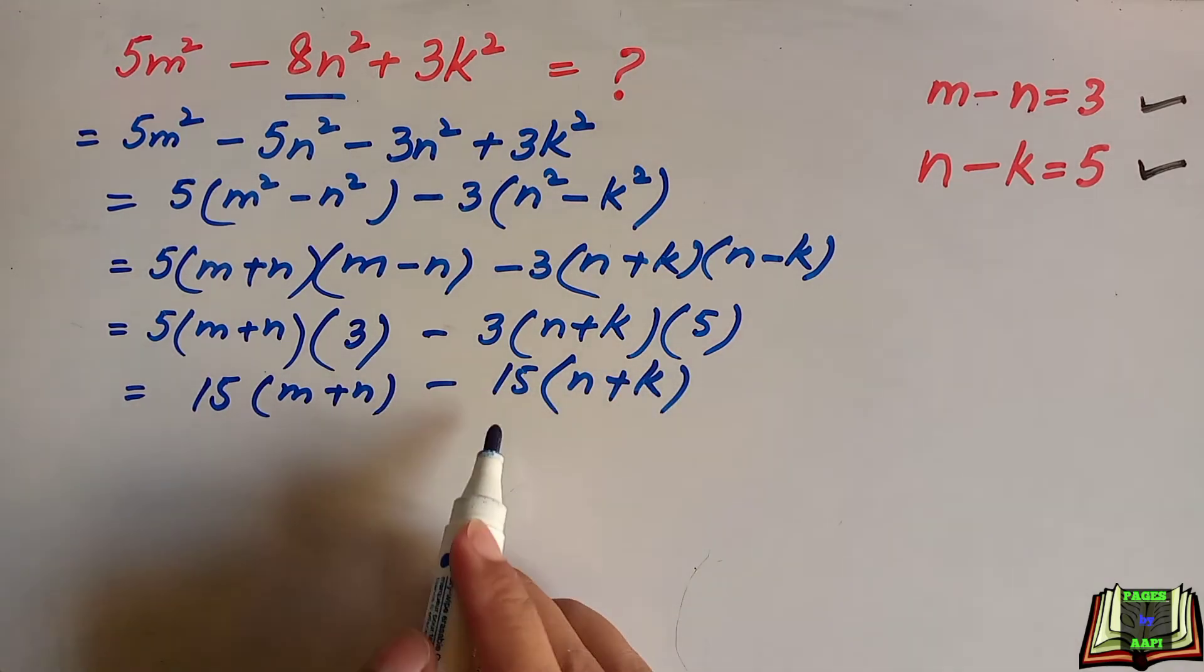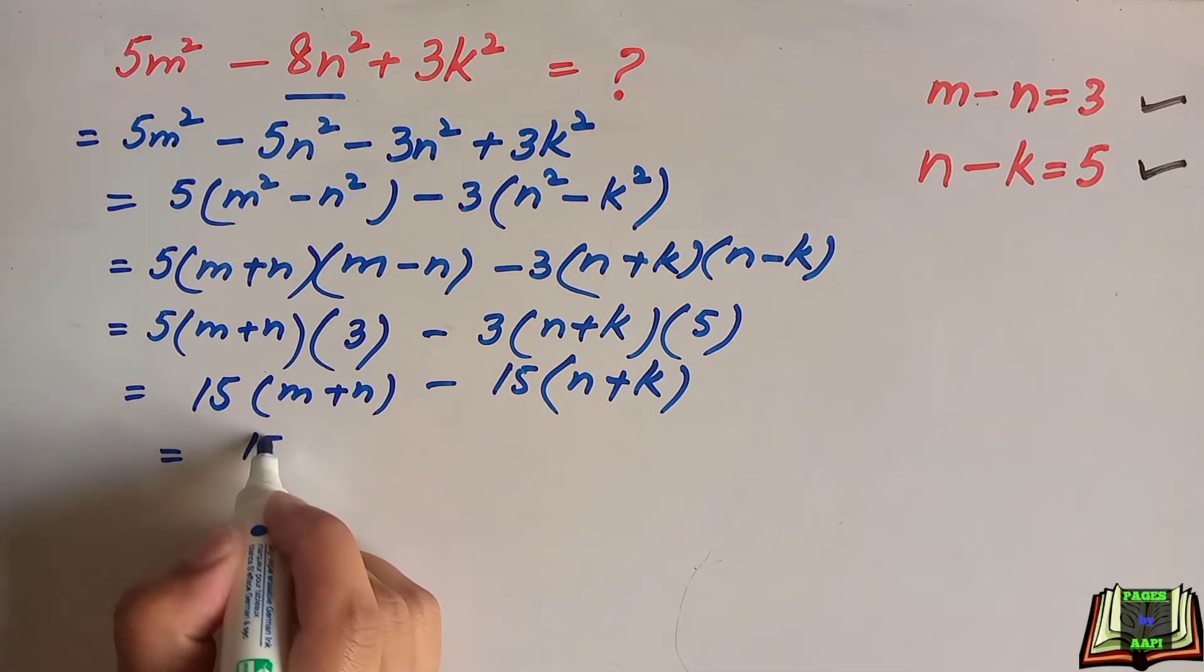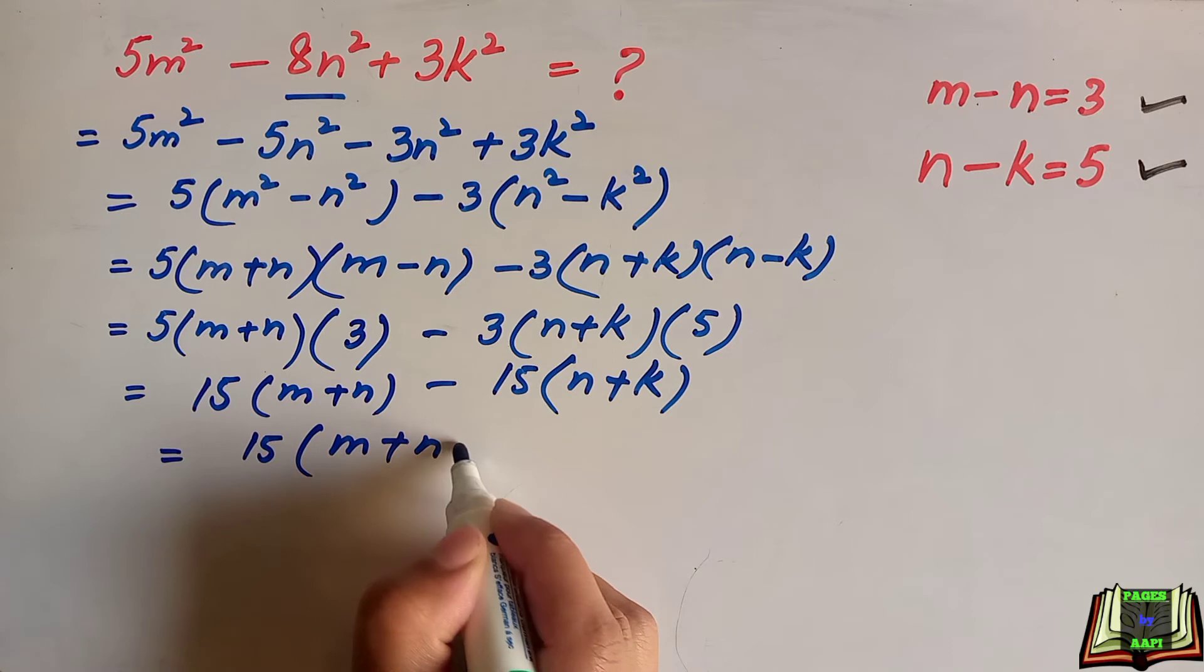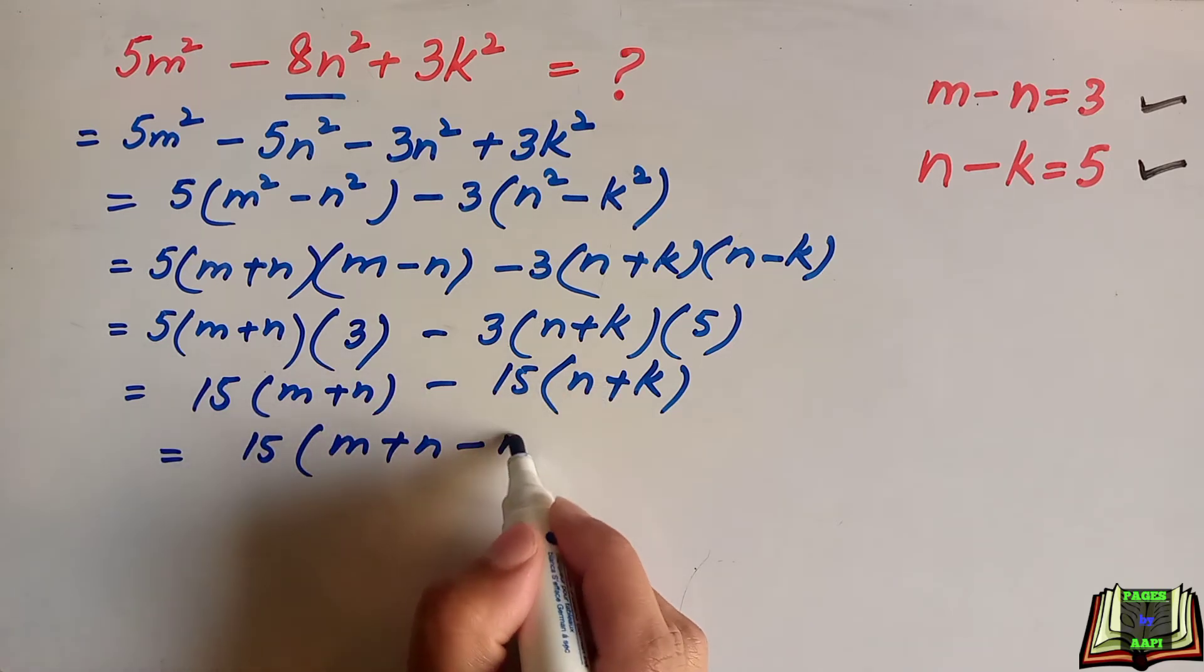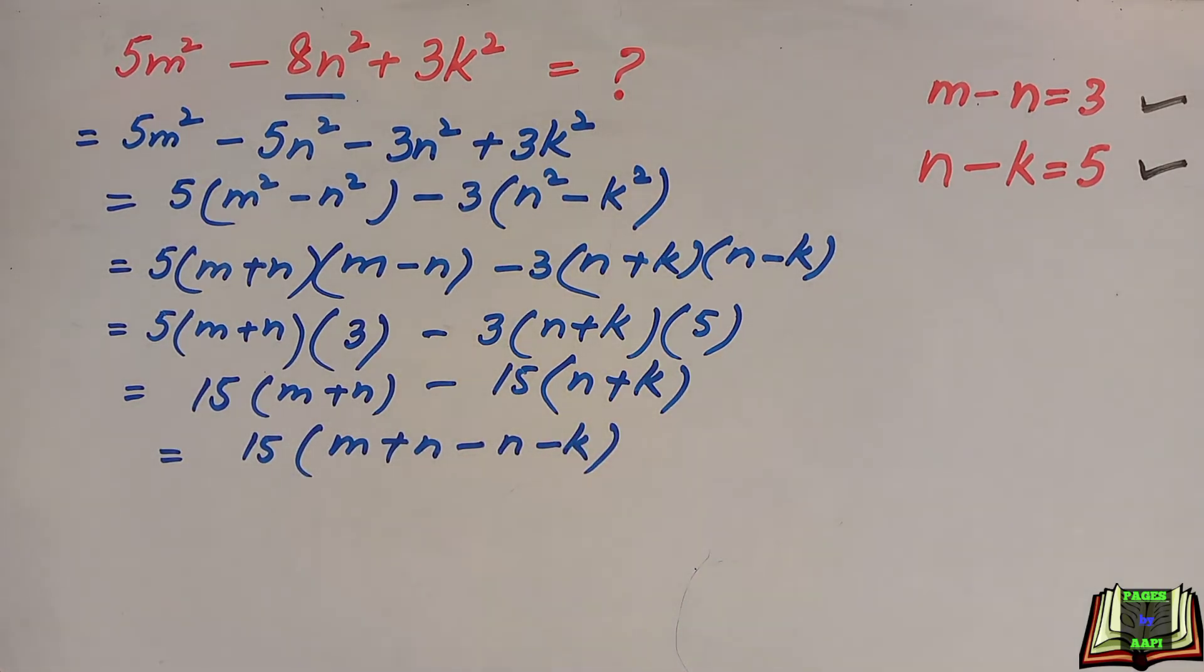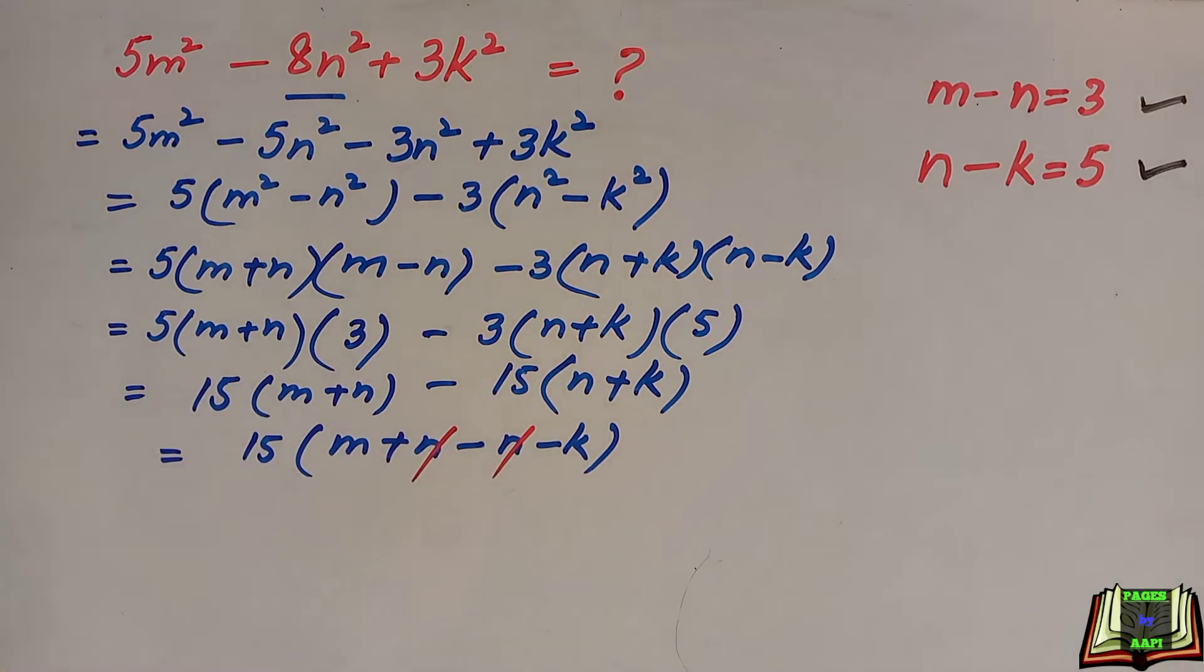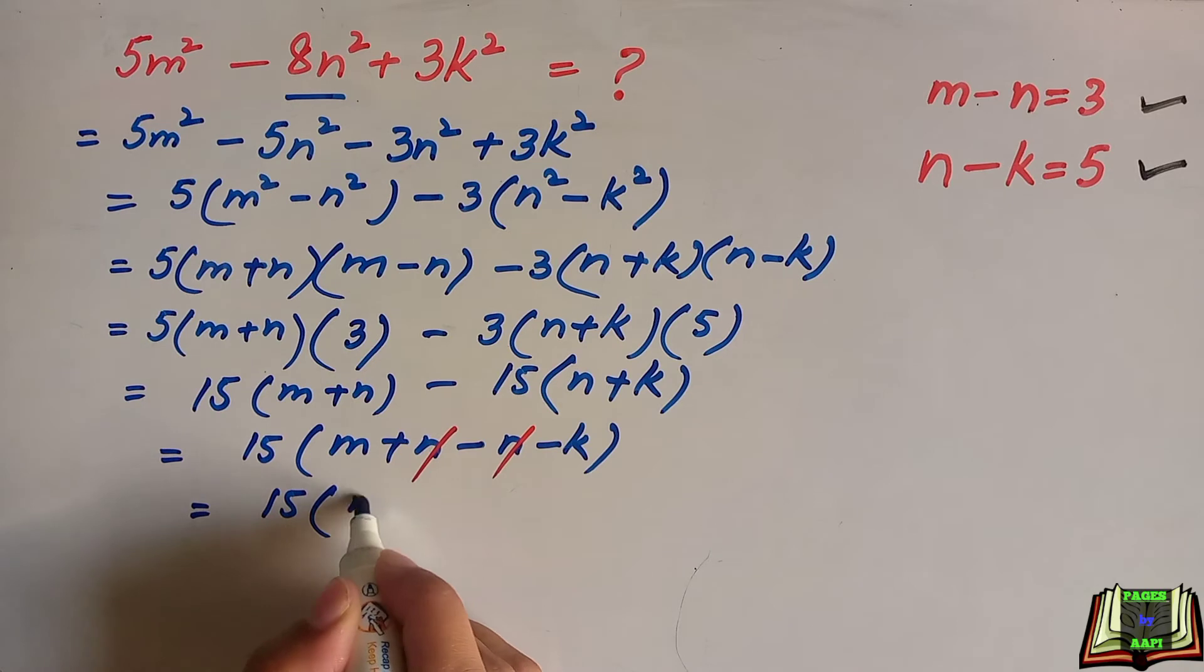In the next step, we are going to take 15 as common: 15(m + n - n - k). Now we are opening this bracket. This n will be cancelled out, plus and minus. We are left with 15(m - k).